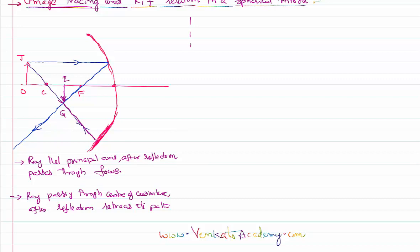Having completed that part, I would like to draw a fresh diagram and again find out the relation between the radius of curvature and the principal focus. One additional point: for a parallel incident light ray, if I draw a normal, that normal passes through the center of curvature. This becomes the angle of incidence and this becomes the angle of reflection, and we know angle of incidence equals angle of reflection.